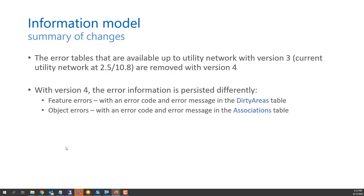An important change with the information model to support this extended model is that error tables are changing. With version 4, released with ArcGIS 2.6 and 10.8.1, error information is persisted differently. We no longer have separate point, line, and polygon error feature tables. Instead, errors associated with features are persisted inside an enhanced dirty areas table with an error code and error message. For junction or edge object errors, their codes and messages are persisted inside the associations table.